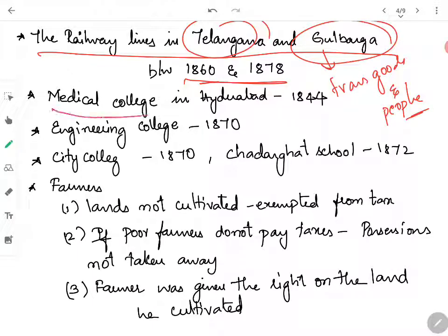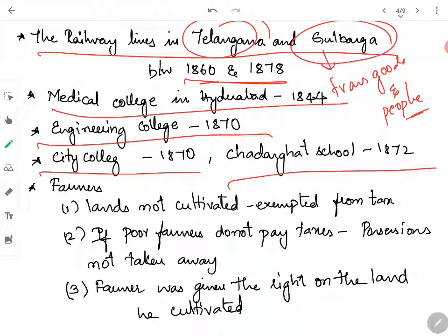He established a Medical College in Hyderabad in 1844, Engineering College in 1870, City College in 1870, and Chatargaard School in 1872. He also made many reforms regarding farmers. He used to say that if farmers are happy, then the state is happy — because you get food from the farmers and you get tax from the farmers.